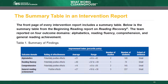Near the beginning of every WWC intervention report, you will find a table that summarizes findings. This enables readers to see the effectiveness of the intervention quickly. Here is a summary table from the Reading Recovery Intervention Report. The summary table reports findings summarized at the level of outcome domains. In this intervention report, the table reports on four outcome domains—alphabetics, reading fluency, comprehension, and general reading achievement. For each of the four domains, the WWC reports six pieces of information in the table.